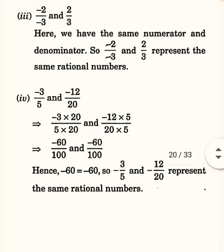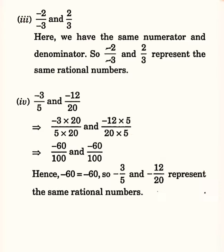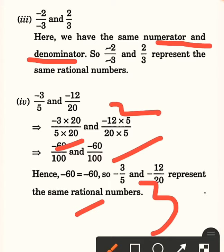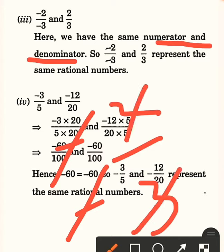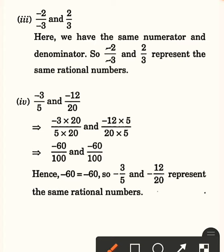Moving ahead with the third one. In the third one, minus 2 upon minus 3 is given, where both the numerator and denominator are negative. The other number is 2 upon 3. In minus 2 upon minus 3, since two negative signs are given, they automatically get cancelled off — minus and minus will be removed.